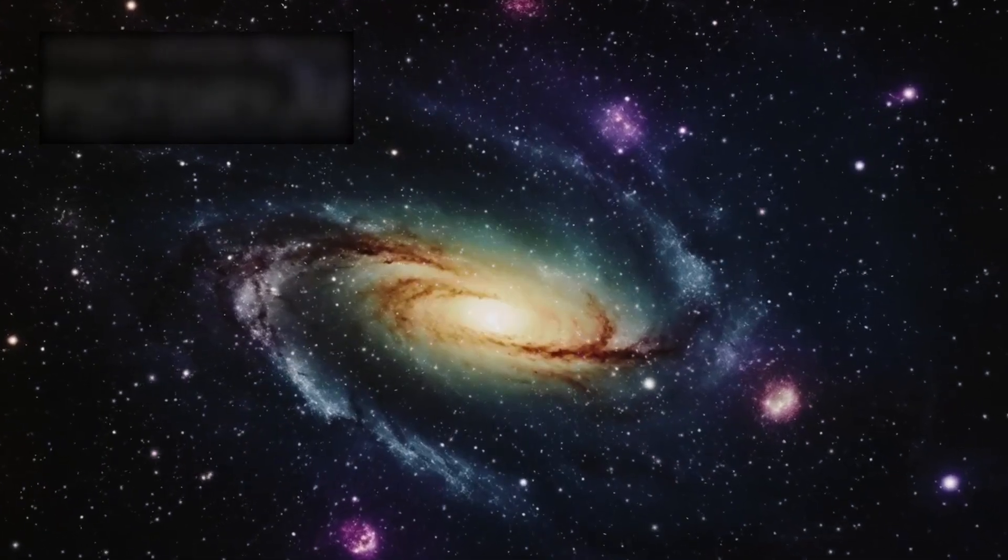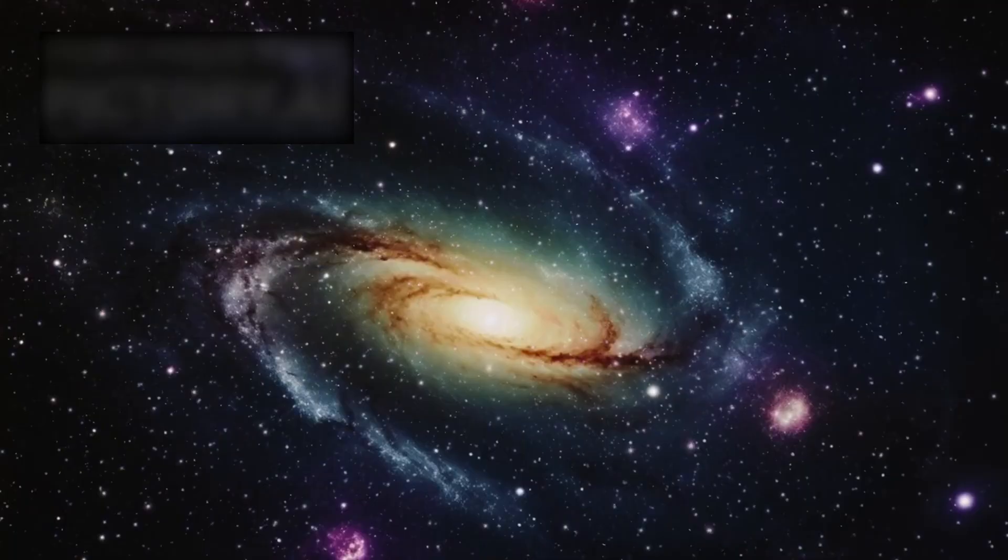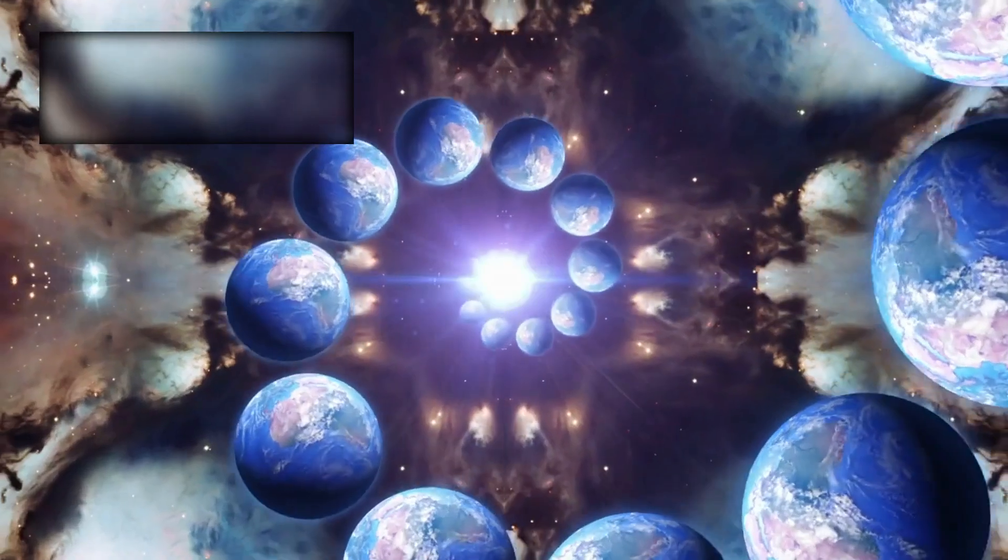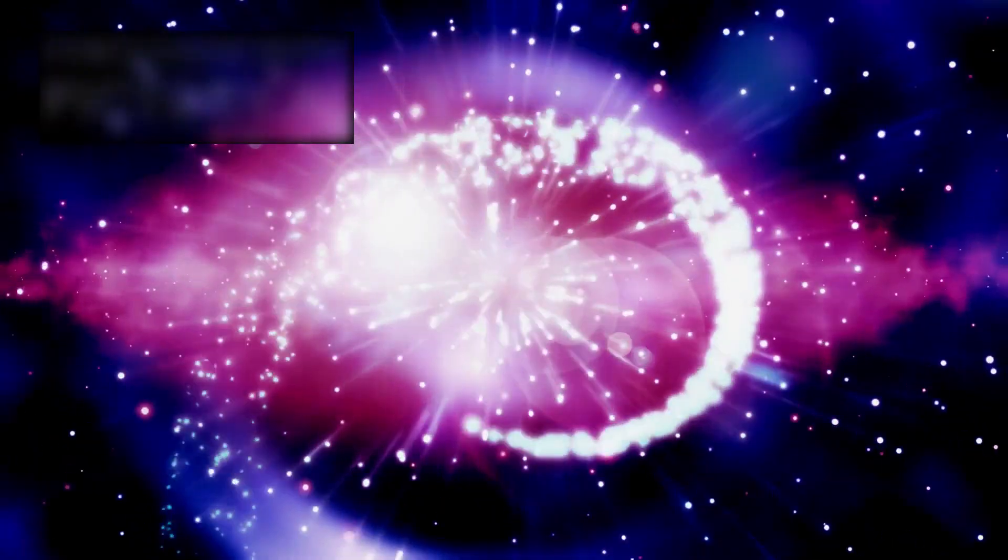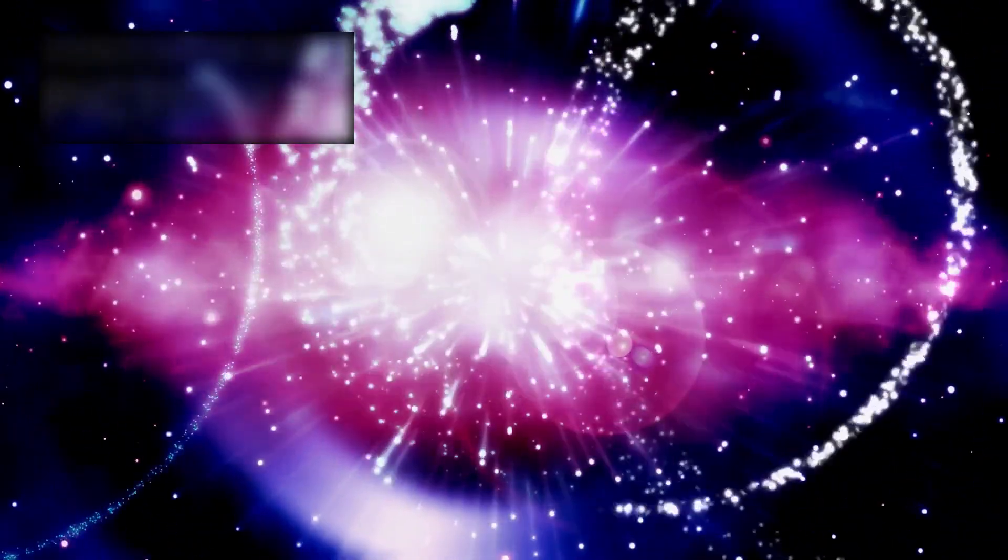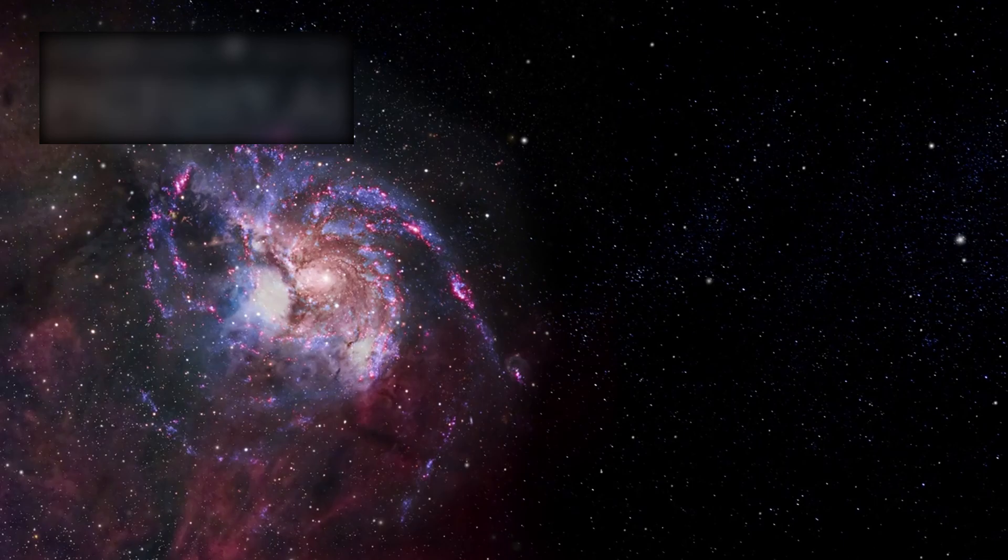Some scientists whispered that dark matter might be alive with purpose, weaving galaxies faster than light could measure. Others wondered if time once flowed differently—stretched, folded, or looped—allowing entire cosmic epochs to pass in moments. And a few dared to ask the most unsettling question: what if the universe was never chaotic to begin with?